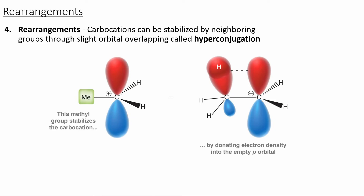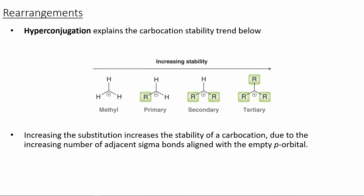Rearrangements occur for carbocations so that we can form a more stable carbocation. A carbocation has an empty p orbital — it wants its full octet. The more carbons next door, the more electrons from the carbon-hydrogen bonds help stabilize the empty p orbital through hyperconjugation. So the more carbons around a carbocation, the more stable it is. A tertiary carbocation is the most stable, followed by secondary, primary, and a methyl carbocation, which is extremely unstable because we have no carbons around it.